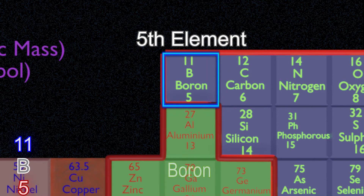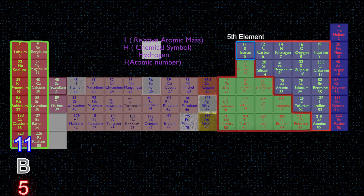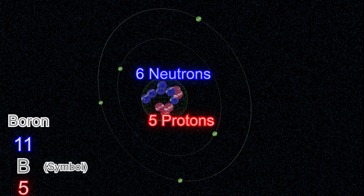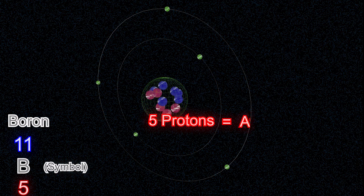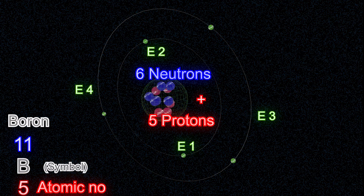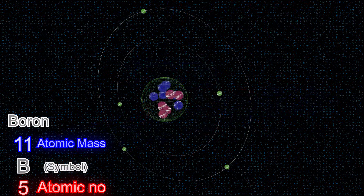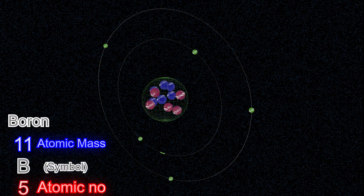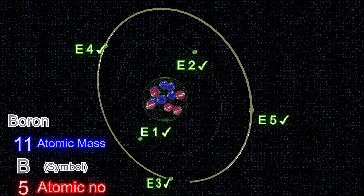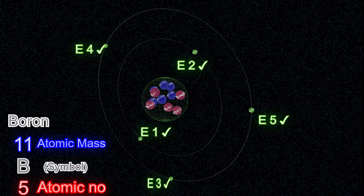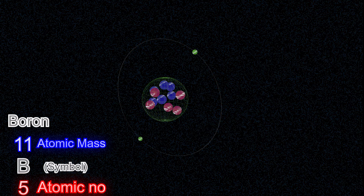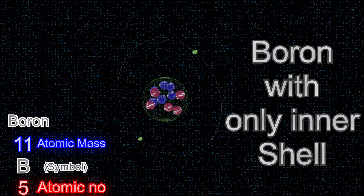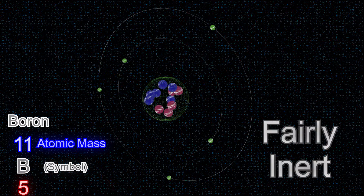Boron is the fifth element in the periodic table. Boron atom has five protons, six neutrons, and five electrons. Five protons means its atomic number is 5. Five protons and six neutrons mean its atomic mass is 11. Two electrons are in the inner shell and three electrons are in the outer shell. In theory, the outer shell needs five more electrons or can lose three electrons to make it complete. Boron tends to lose its outer three electrons during the reaction to make it stable. If it got rid of the outer electrons, it will only have the inner shell with two electrons making it stable. This tendency makes boron a fairly inert element.